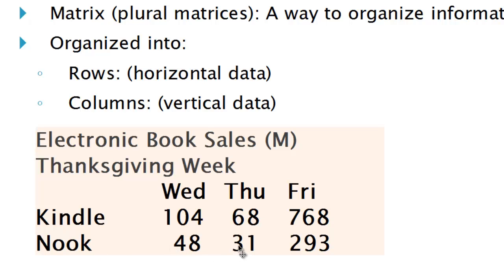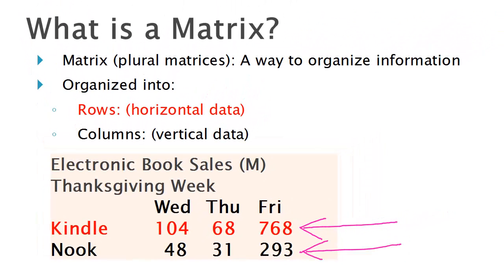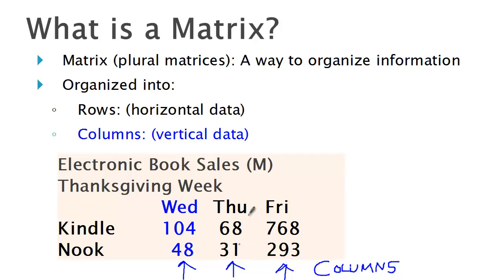Nook had corresponding data. We can organize this into a matrix where the rows — the horizontal data — represent each type of electronic book. So this row of Kindle data, and the row of Nook data, represent the sales for each device. The columns are the vertical data and they represent the different days of Thanksgiving week. There's no hard and fast rule; it depends on your situation. You are totally in control of your matrix.